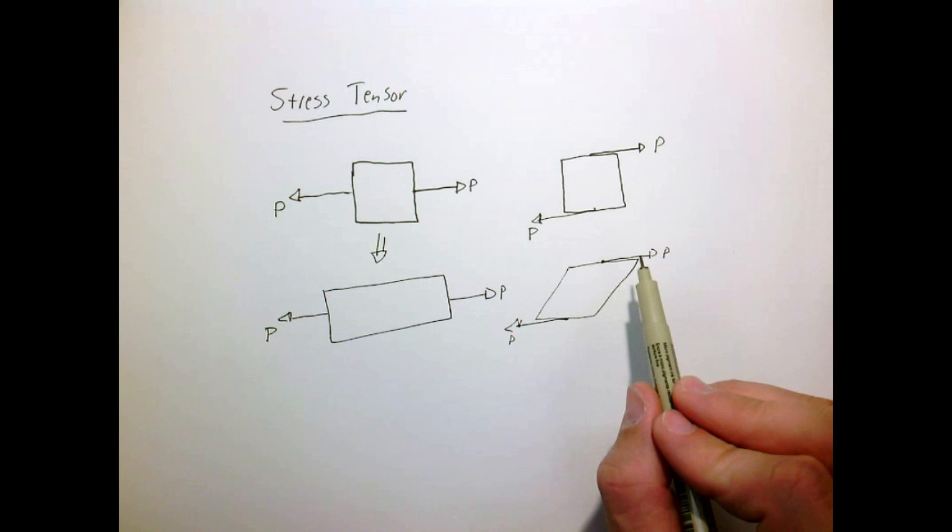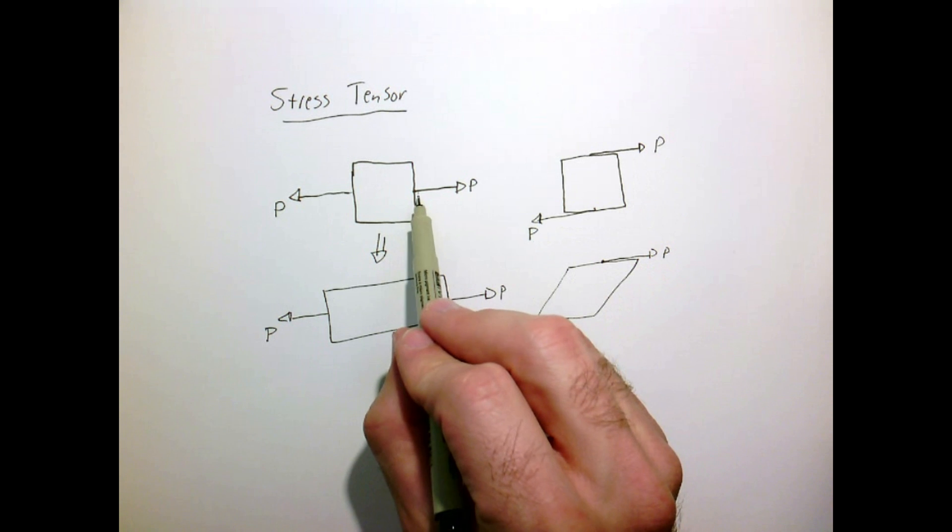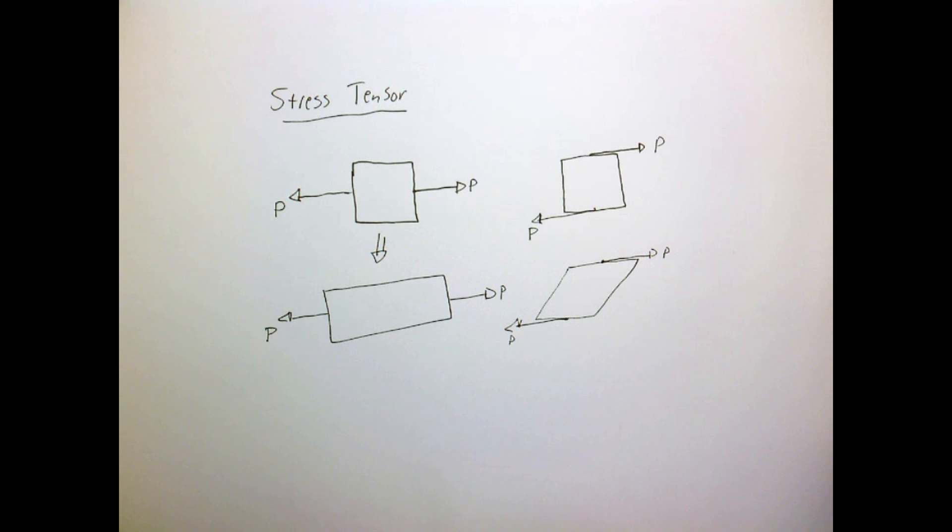So not only does the magnitude of the force matter, because obviously if I pulled on this harder it might elongate more, but the face upon which that force acts is important. So this leads us to the idea of the stress tensor.